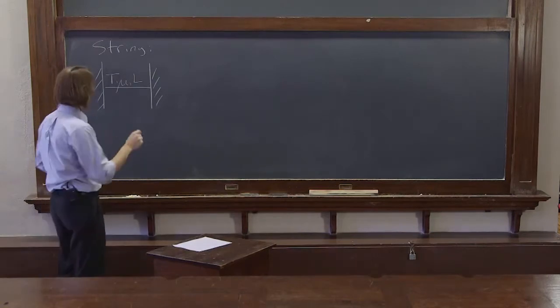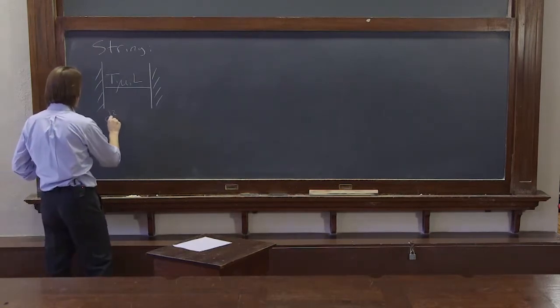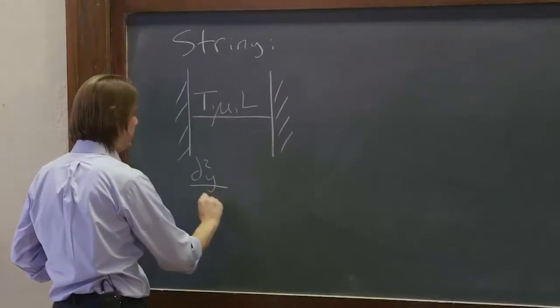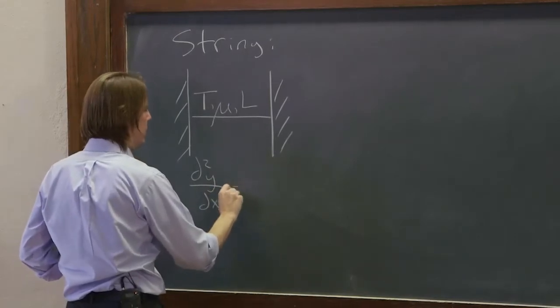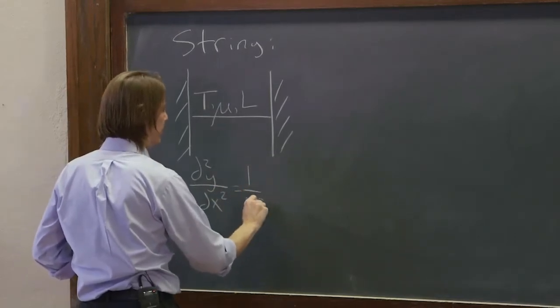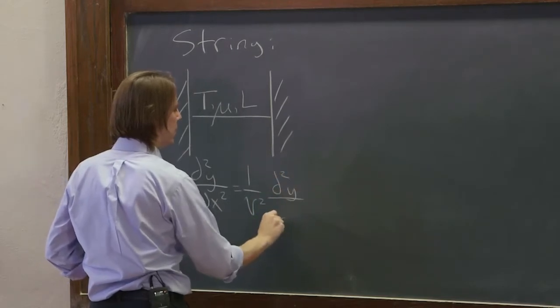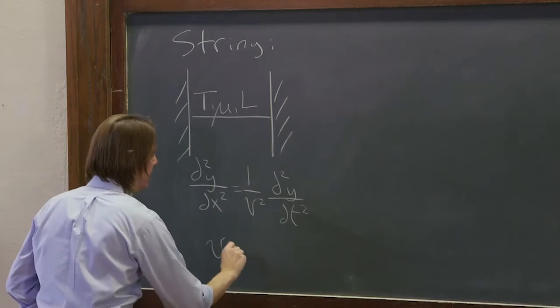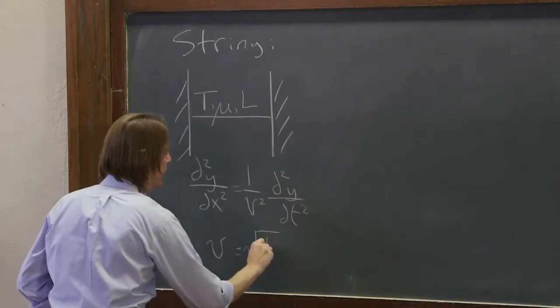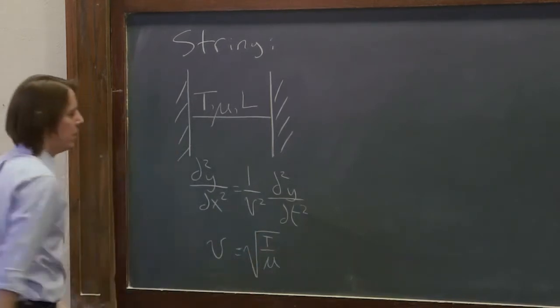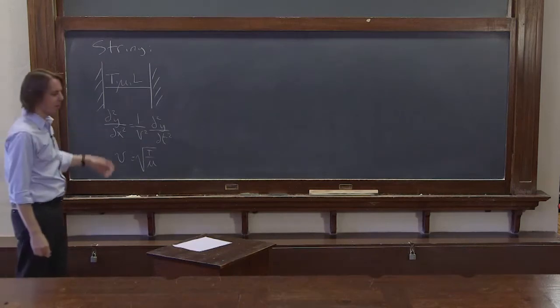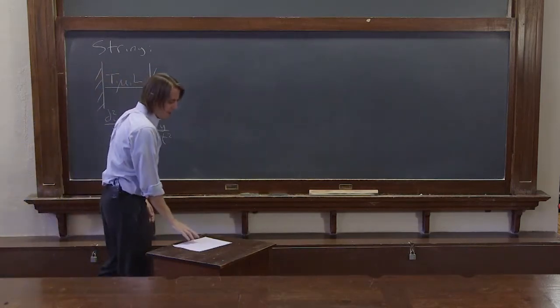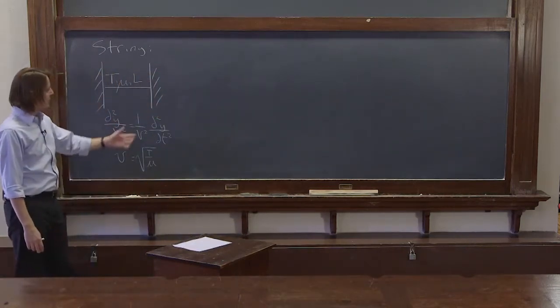And we decided its motion is described by the wave equation: d2y/dx2 equals 1 over some velocity squared d2y/dt2, where the velocity equals the square root of the tension over the mass density. There we go. The question is, how do we solve this differential equation?